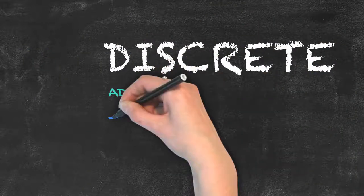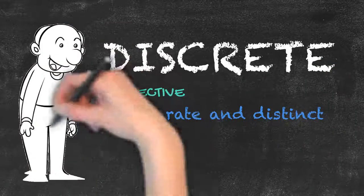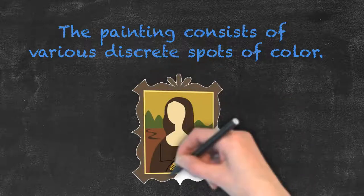Discrete is also an adjective but means separate and distinct. An example sentence would be: The painting consists of various discrete spots of color.